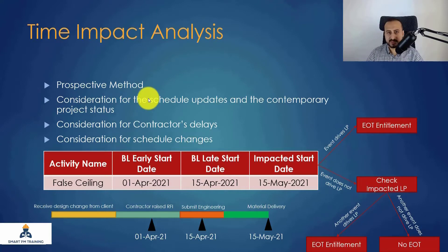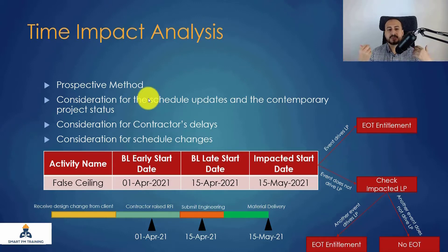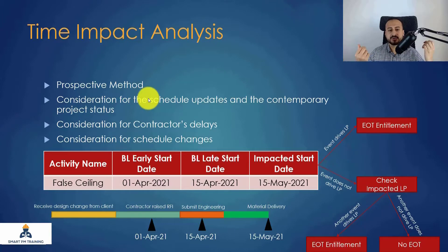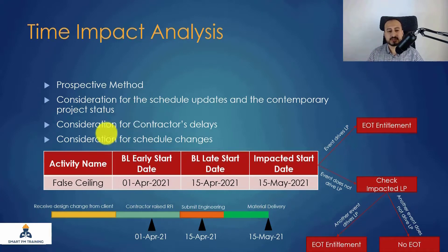They are almost similar. The only major difference is that in the Impacted as Planned I use the baseline schedule, while in the Time Impact Analysis I use a schedule update. Because TIA takes into consideration the contractor's delay and the schedule update status — whether ahead or behind — it is a stronger method.